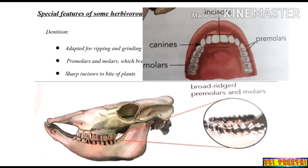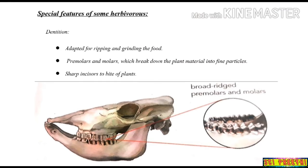For better understanding, consider human beings. When you open your mouth, the first four teeth are called incisors — these are very strong and used to bite food like an apple. The next two teeth are the canines, and after that you have premolars, followed by molars. Premolars and molars are used to chew the food. For animals, premolars and molars break the plant material, incisors bite the plant material, and animals have small or non-existent canines.